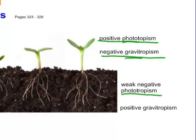In other words, the roots don't really like light — they try to grow away from it. But we have a definite positive gravitropism: roots definitely grow towards gravity.